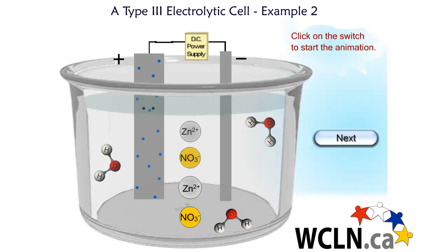When the switch is closed, a zinc atom is oxidized at the anode on the left, and two electrons travel through the wire over to the cathode at the right. Finally, a zinc ion receives those two electrons as it is reduced, and it will add mass to that zinc electrode.